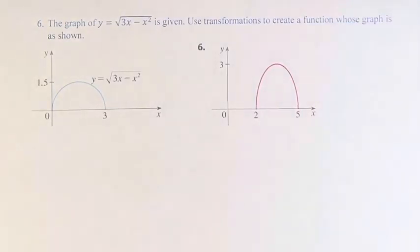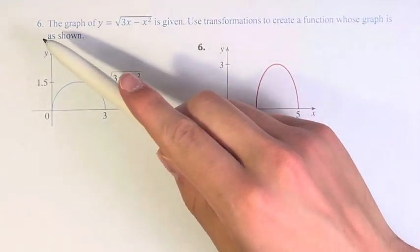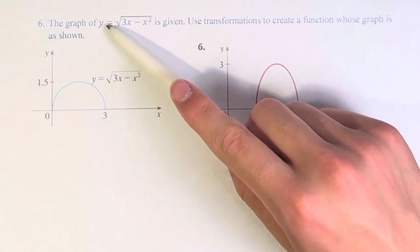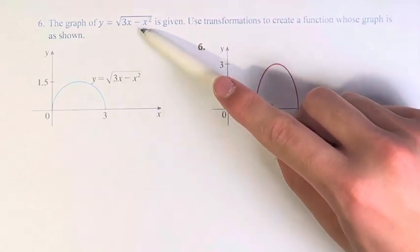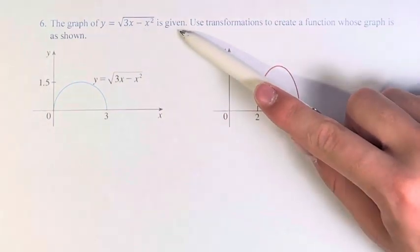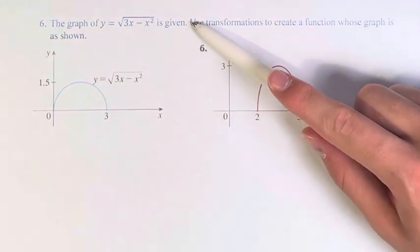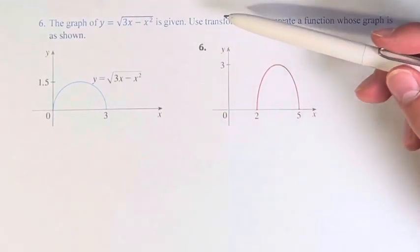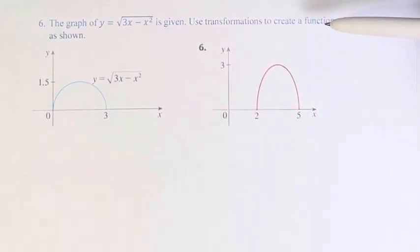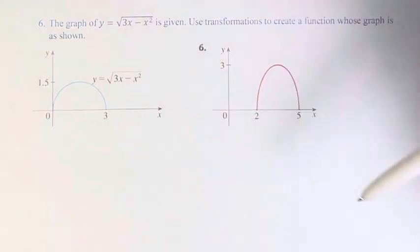Hello, and welcome back to another video. In this problem, we're told that the graph of y is equal to 3x minus x squared is given, and we're asked to use transformations to create a function whose graph is as shown.